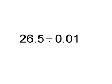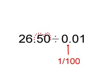The next sum is 26.5 divided by 0.01. 0.01 is really 1 over 100. So you move the decimal place two times to the right.